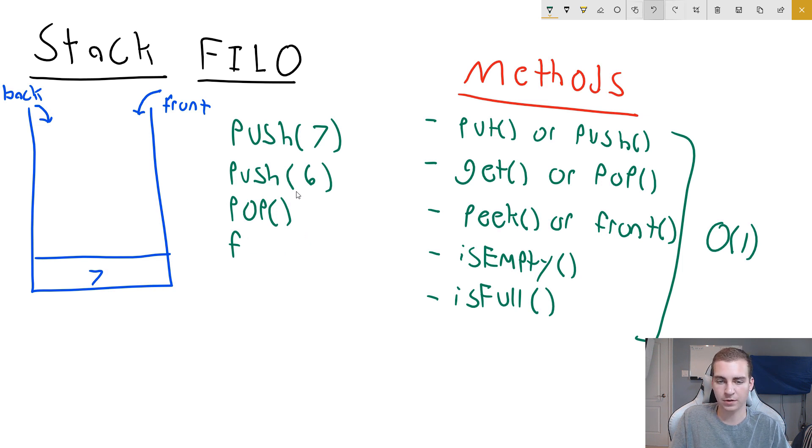Now, the last two methods to talk about are isEmpty and isFull. These do exactly what they say, they're going to tell us if the stack is empty, or if the stack is full. Now, the reason we need these methods is because if we try to pop an item or peek an item, and the stack is empty, we're going to run into an error. So oftentimes, we need to check by using an if statement and saying, if not, stack is empty, right, then we can go ahead and we can do that pop, or we can do that peek that we want to do.